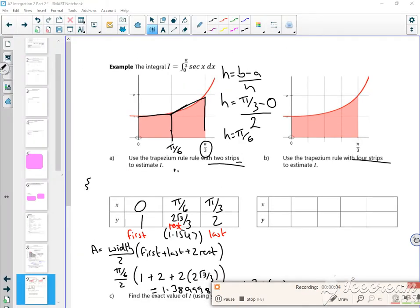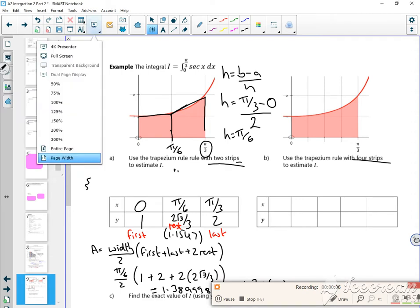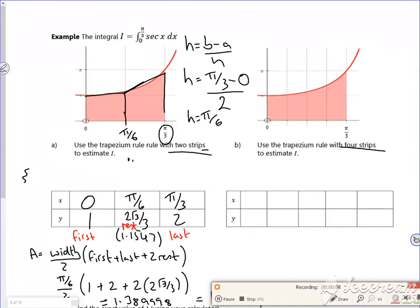So this is the third video and we're continuing with this example. If I look at this for four strips, my h would be b minus a, so π/3 minus 0, but this time it's over four strips, so h is π over 12. You can see hopefully that the error between the top of the trapezium and the graph is far less, so it's more accurate.